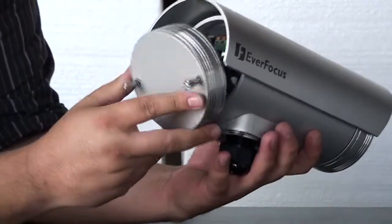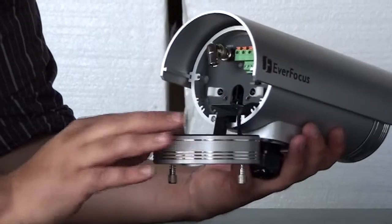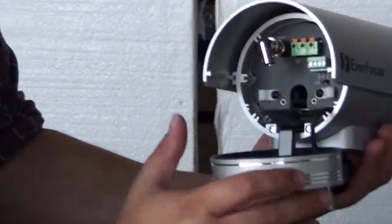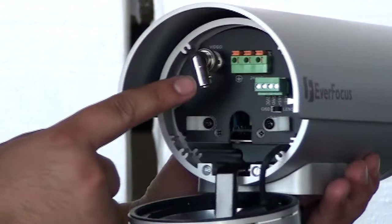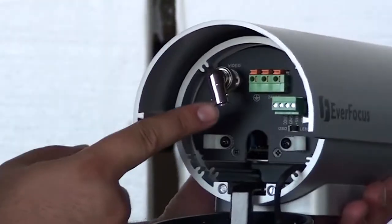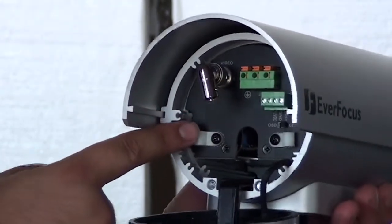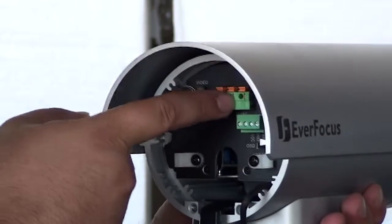The back unscrews and it's got a rubberized gasket here to keep all the water out. You have your video here. This is where your coax is going to go into. And you have your power that's going to go right here.